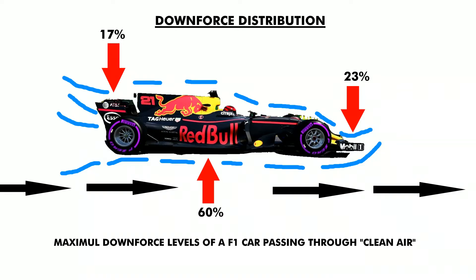This allows the driver to take corners at higher speeds. Interestingly, the principle used here is the same one used for aeroplanes. While the wings on an aeroplane create lift, on an F1 car the wings are reversed and create a downwards force, aka aerodynamic grip.